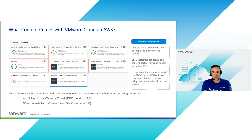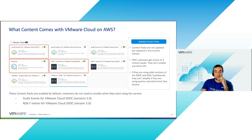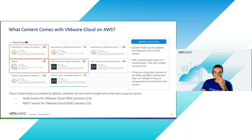In the free tier, you get three content packs highlighted: audit events for VMware Cloud SDDC, NSX-T events, and the general vRealize Log Insight Cloud pack. These are not enabled by default — you need to enable them manually. Note that when a new version is released, the old one is not replaced automatically. Currently, the content packs in use are version 2.0 for audit events and version 5.0 for NSX-T events, so be careful with version management.